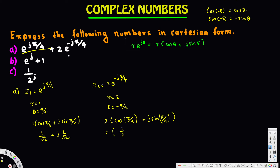So converting: cosine(5π/4) is 1/√2, giving us 2 times (1/√2 minus j times 1/√2). Multiplying through by 2, z2 equals 2/√2 minus j times 2/√2.